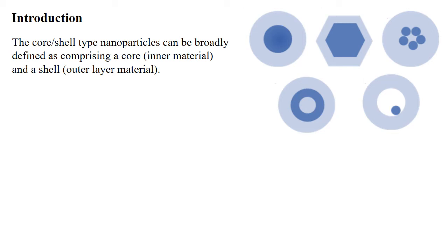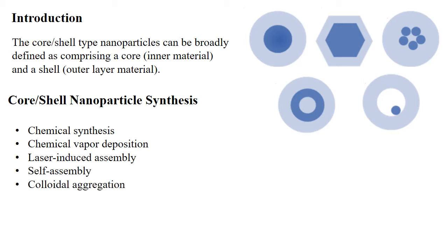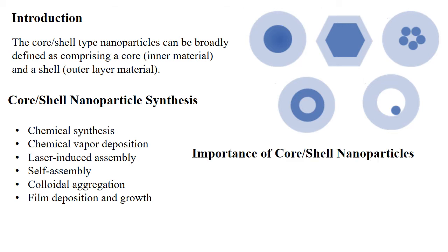These kinds of nanomaterials can be synthesized from different synthesis approaches. Some of the synthesis methods are chemical synthesis, chemical vapor deposition, laser-induced assembly, self-assembly, colloid aggregation, and flame deposition and growth.